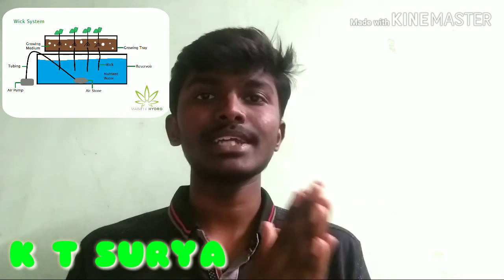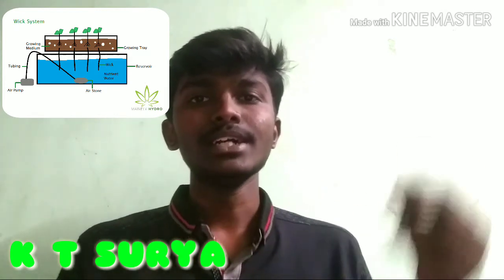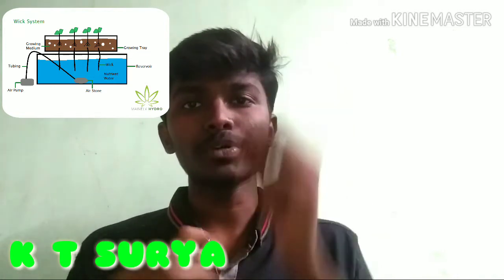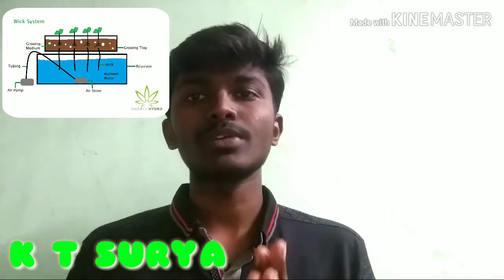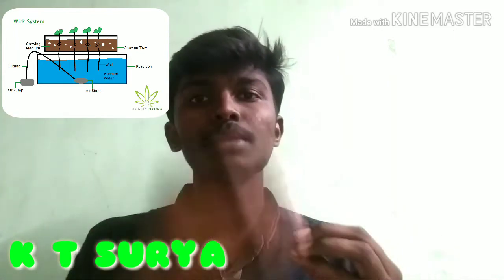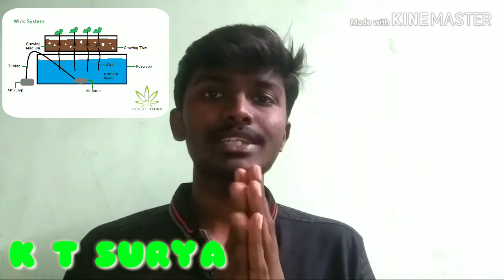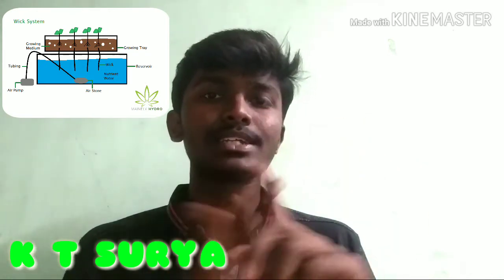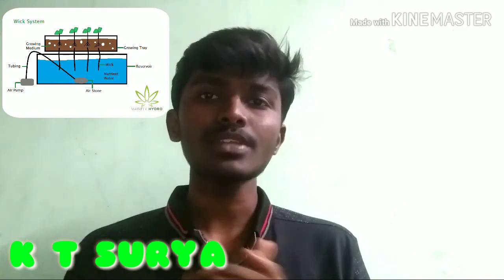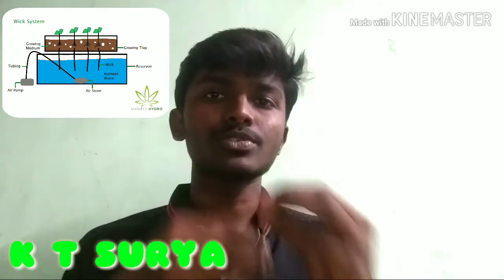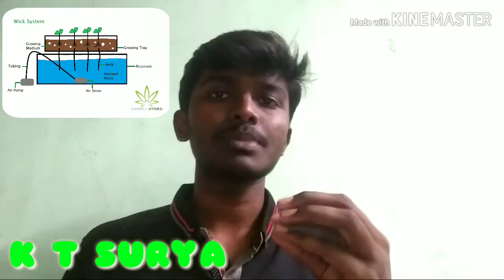We can call the first type of hydroponics system the wick system. The wick is placed in the nutrient solution. One of these things will be used to make the roots absorb nutrients. The roots are used to absorb the nutrient solution.